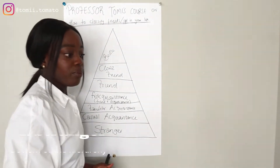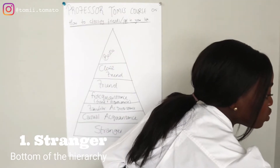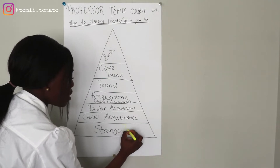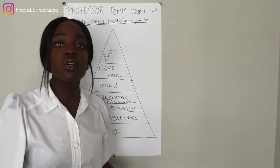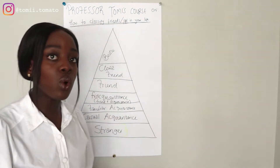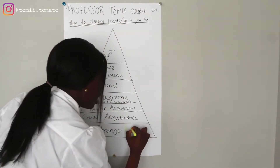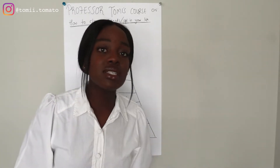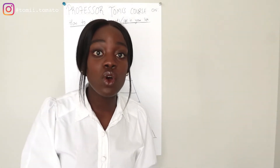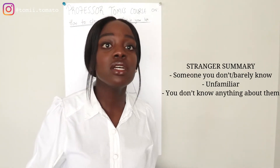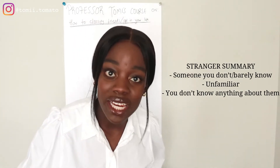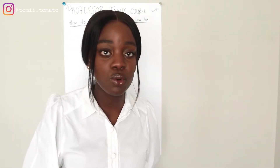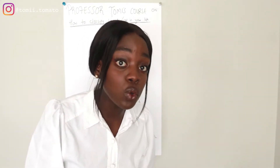So now let's start with stranger. Everybody knows what a stranger is — somebody you don't really know, somebody you just met, very unfamiliar. Or maybe you see them in school, on campus, or at an event where you've never spoken to them. They're still a stranger because you don't know anything about them. Anybody you don't know anything about, especially if you've never spoken to them — stranger zone only.